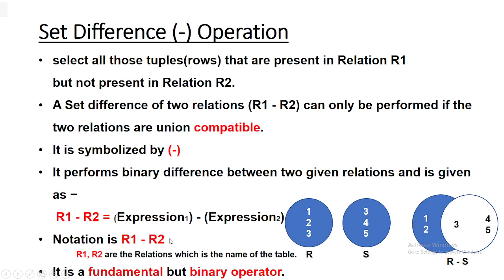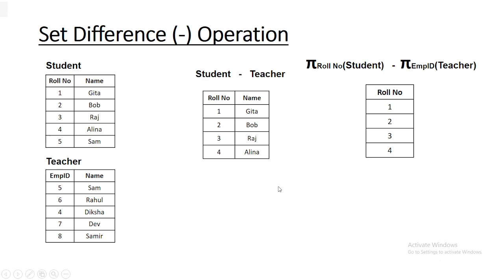The set difference operator works the same way as in set theory. Suppose we have two sets R and S: R consists of {1, 2, 3} and S consists of {3, 4, 5}. If you perform the set difference operation R minus S, you get {1, 2} as the output, because it selects all those tuples present in the first relation R — which are 1, 2, 3 — but excludes the record that is also in the second relation S. Since 3 is in S, only 1 and 2 remain.